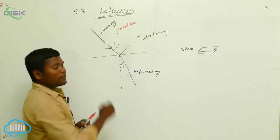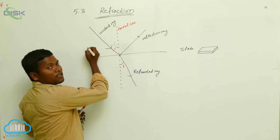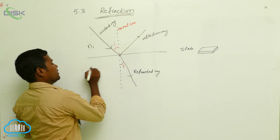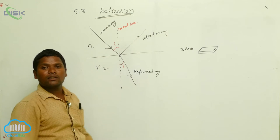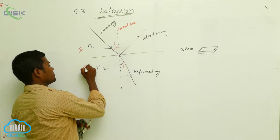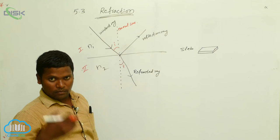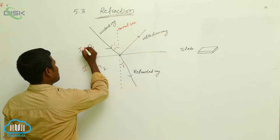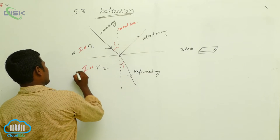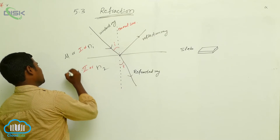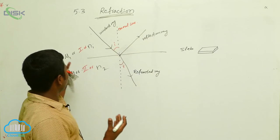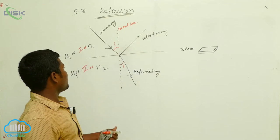How many mediums are there? Two mediums — this is the first medium and this is the second medium. The above one is the first medium, the below one is the second medium. We can denote them as n1 and n2, or mu1 and mu2, or any two letters for medium 1 and medium 2.